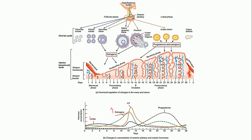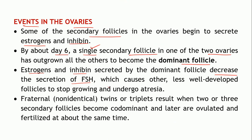As FSH levels decrease, growth of the other follicles is reduced. The other, less well-developed follicles stop growing and undergo atresia. The dominant follicle, however, continues to grow to around 20 mm in diameter, forming a blister-like bulge on the surface of the ovary, ready for ovulation.